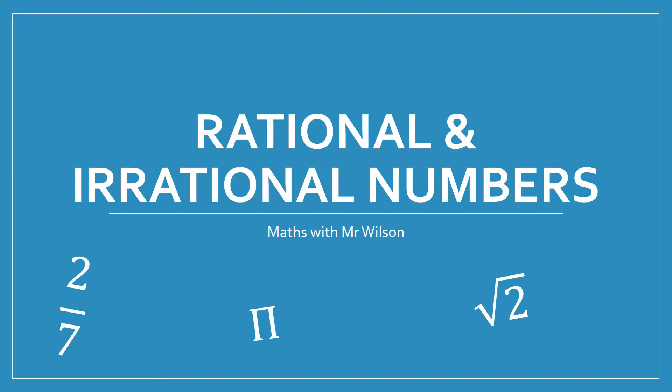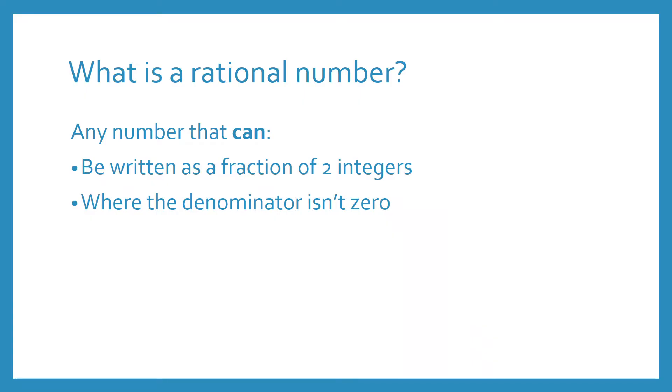Welcome to this lesson where we're going to look at rational and irrational numbers. So a rational number is any number which can be written as a fraction of two integers, where the denominator, the bottom number, isn't zero.